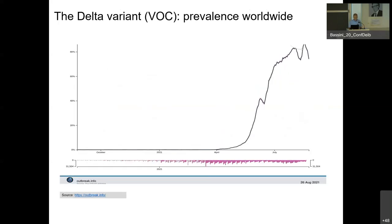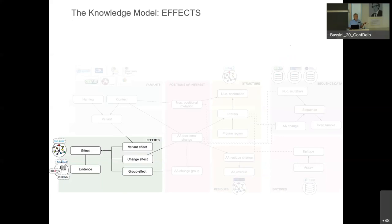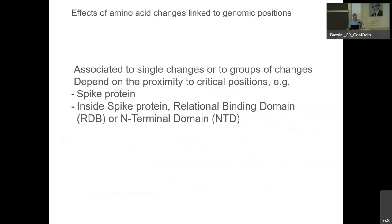This is how the delta variant became predominant — now everyone more or less deals with the delta variant. The effects of variants are monitored by certain organizations; their evidence comes from various papers. The effects can be related to a variant, to a single change, or to a group of changes. Most interesting effects are on the spike protein — particularly in the Receptor Binding Domain or N-Terminal Domain.